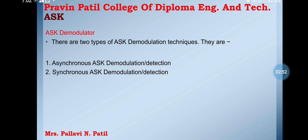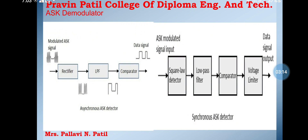In synchronous detection, the clock frequency at the transmitter matches with the clock frequency at the receiver — this is known as the synchronous method, where the frequencies get synchronized. Otherwise, it is known as asynchronous. This is the diagram of the ASK demodulator.